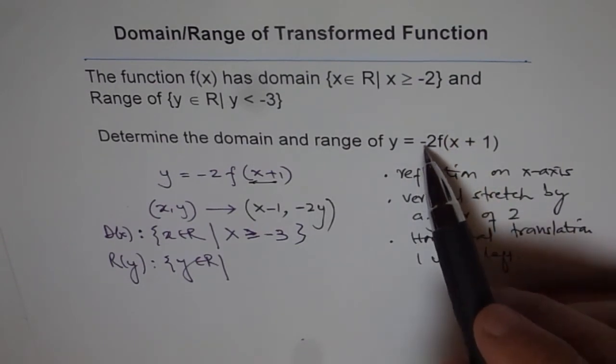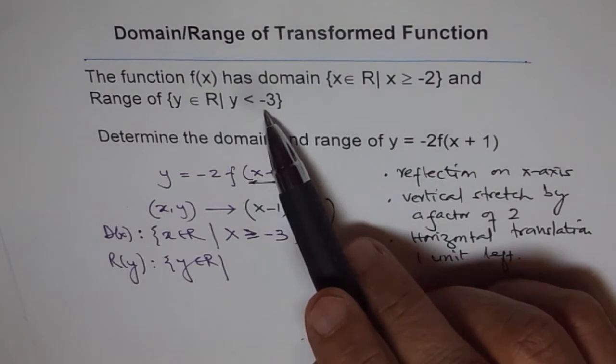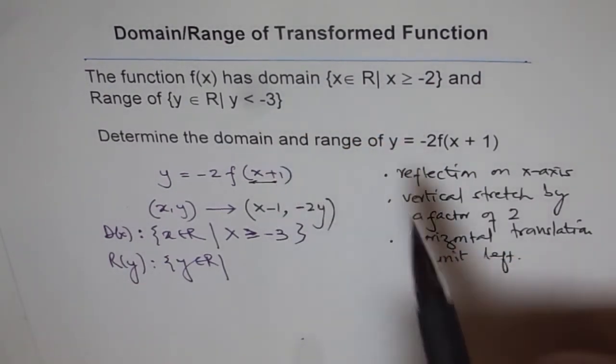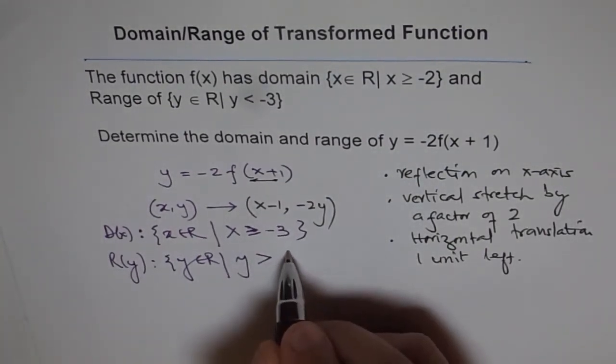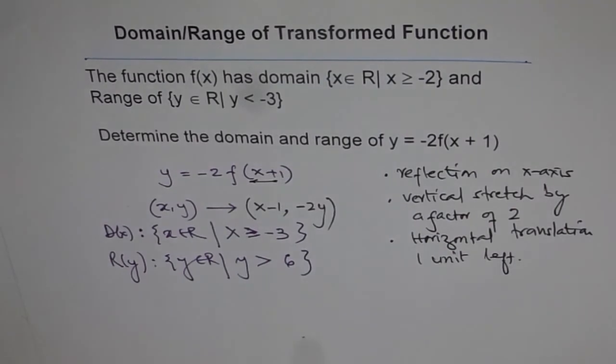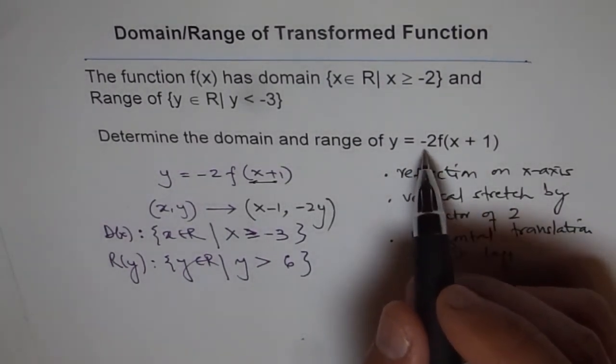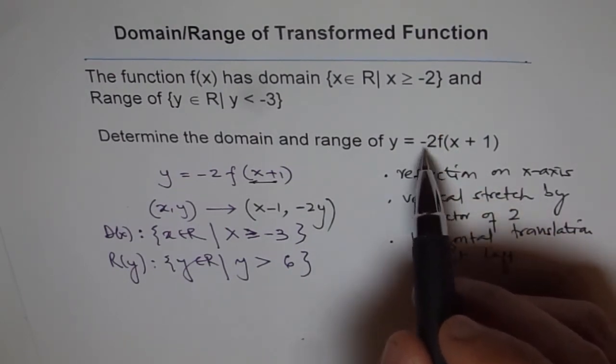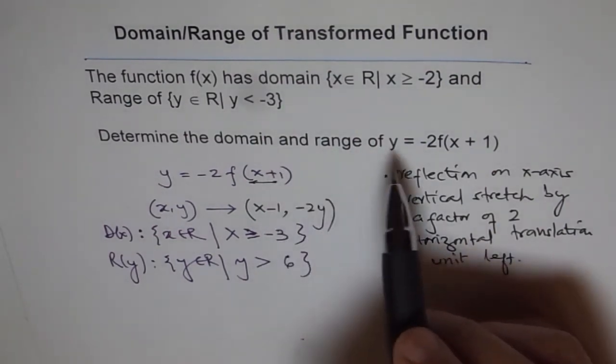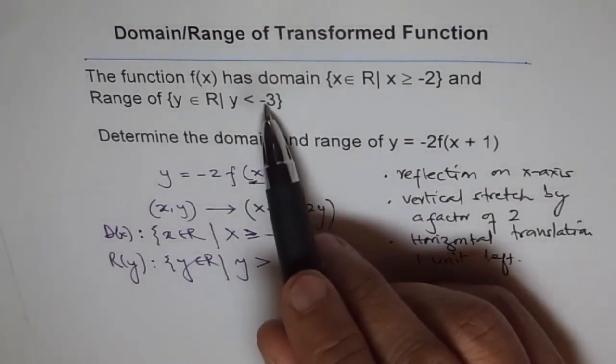The -2 changes -3 to +6, so it becomes y > 6. That's the effect of the negative sign—it reflects the values. When you multiply -2 by -3, you get +6.